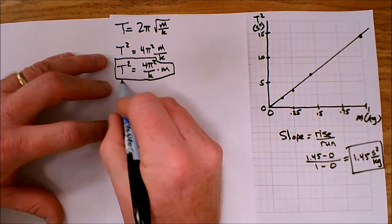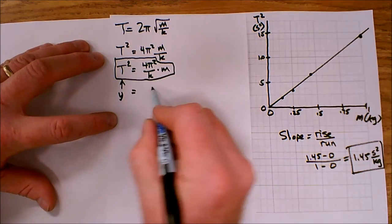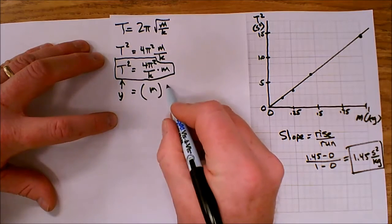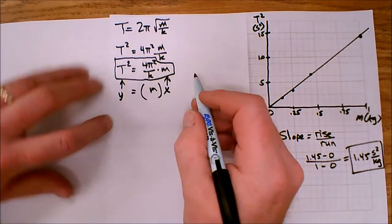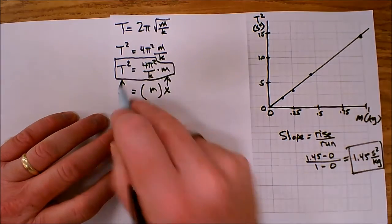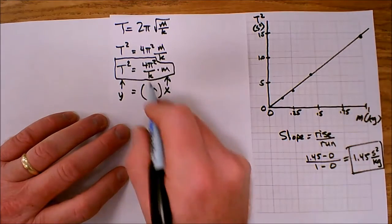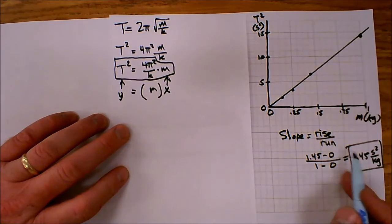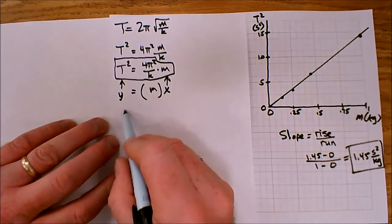Now when I write it like this, I have a function in the form y equals m times x, because my x variable on the graph is mass. My y variable on the graph is T squared. And so the slope I found is equal to 4π squared over k.